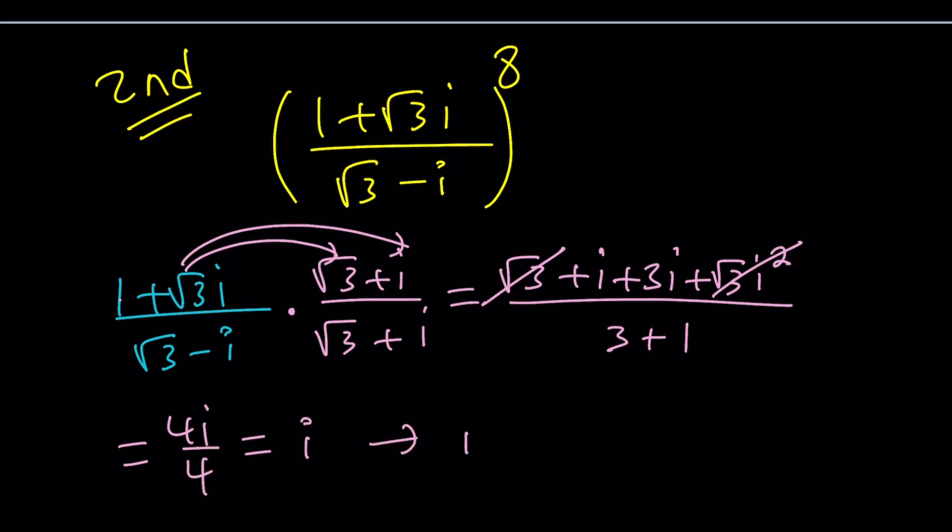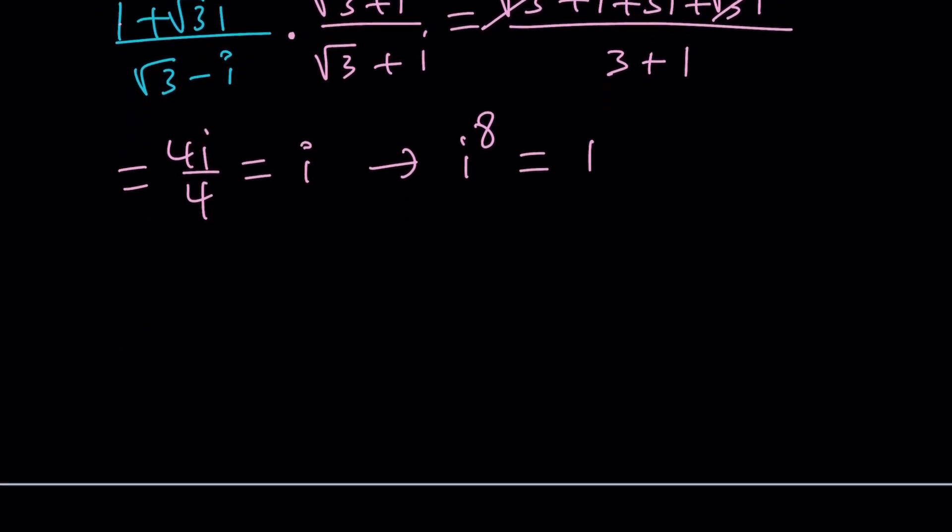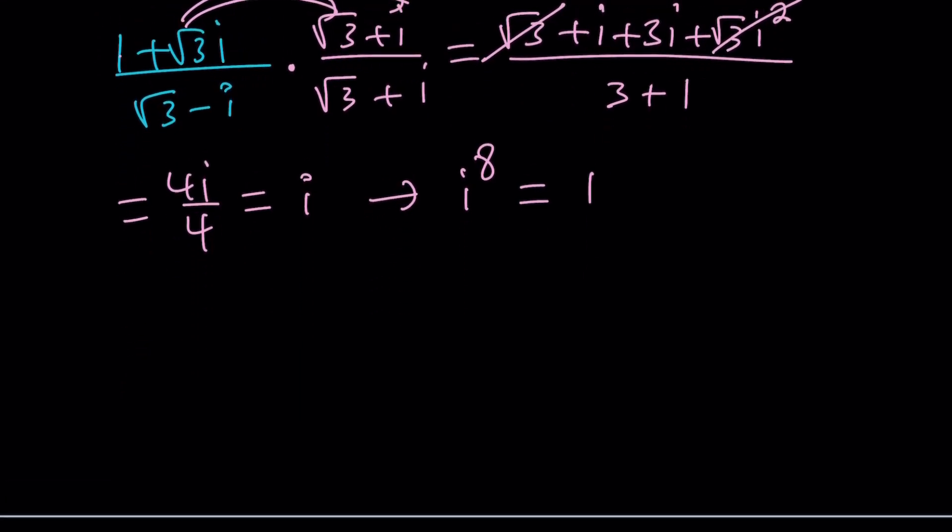And now we're supposed to raise this to the 8th power. And i^8, as before, is going to be 1. One more time. Great. So the second method basically uses the complex conjugates and simplifies the inside first.